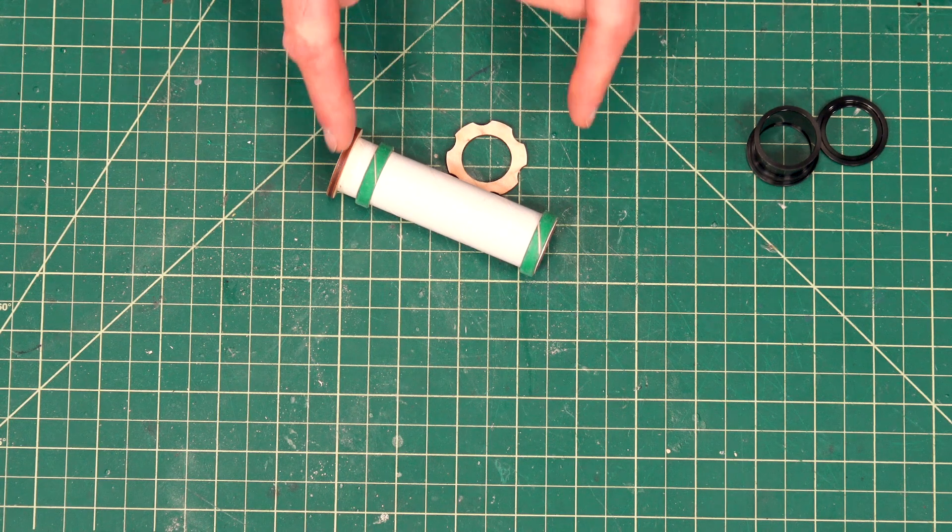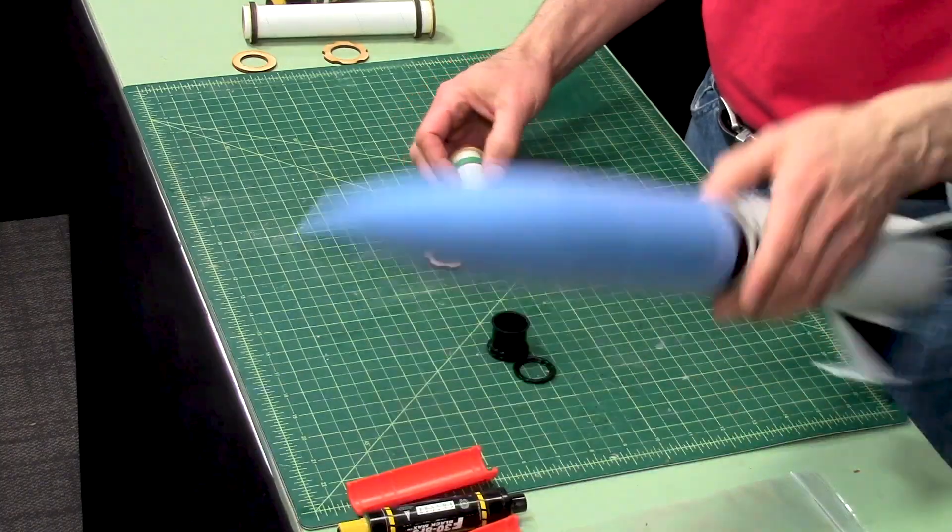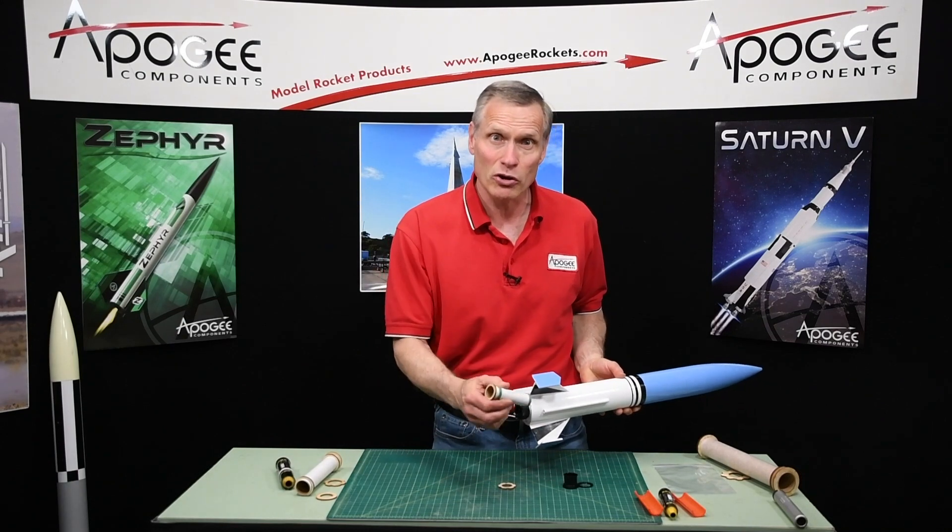This simple item right here is the Apogee engine mount adapter. What it allows you to do is take a larger diameter engine mount and fly a smaller rocket motor in it.